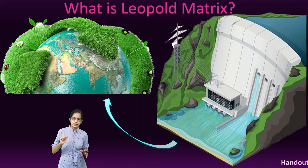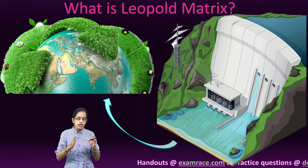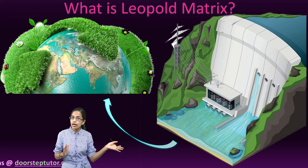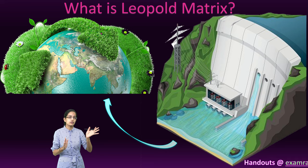This concept was first laid down by Leopold. When Leopold brought this matrix, he brought the concept under two axes: the horizontal axis and the vertical axis. On the horizontal axis, he pointed out the actions that can lead to environmental impact — what would be the impact on the environment. There could be runoff, there could be loss of fertile soil, and so on.